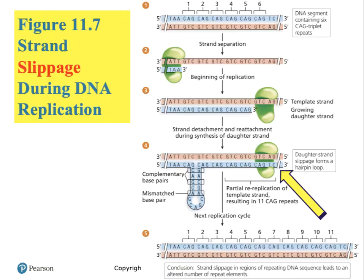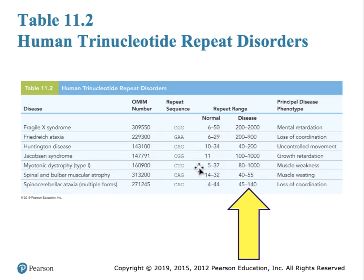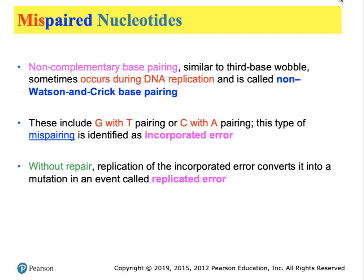This strand slippage is important because it can lead to trinucleotide repeat expansion disorders. There is a correlation between the number of repeats and the severity of a disease — there may be a cutoff below which there's no disease, and above which disease occurs. Increasing the number of repeats beyond a threshold causes the disorder. This is illustrated in Table 11.2, showing the normal range of repeats in the human population — if humans have more repeats than their parents or other members of the community, they will develop the disease.